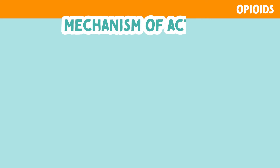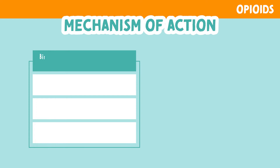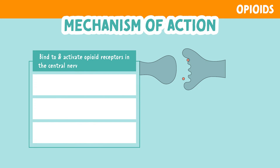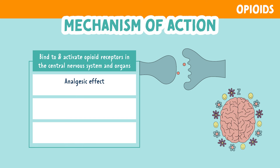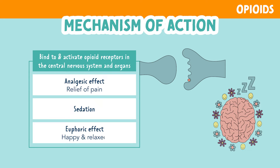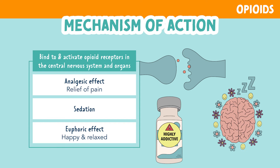Let's look at the mechanism of action. Opioids bind to and activate opioid receptors on cells located in the central nervous system and other organs in the body. They are especially activated on receptors that involve feeling pain and pleasure. This causes an analgesic effect or relief of pain, sedation, and a euphoric effect — a happy, carefree feeling. This results in decreased pain but also makes opioids highly addictive due to that euphoric effect.